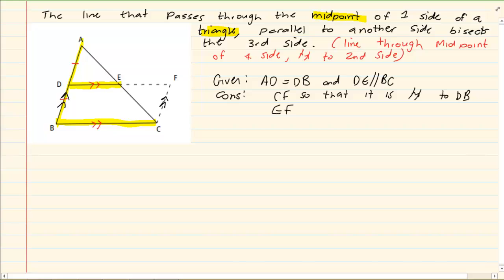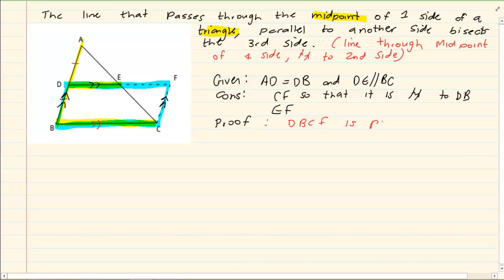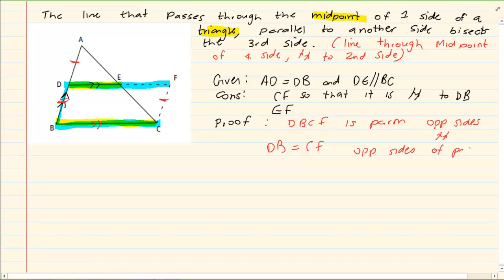Looking at the construction, in our proof: since CF is parallel to BD, and it is given that DE is parallel to BC, we know that DBCF is a parallelogram — because opposite sides are parallel. This means DB is equal to CF, because they are opposite sides of a parallelogram.